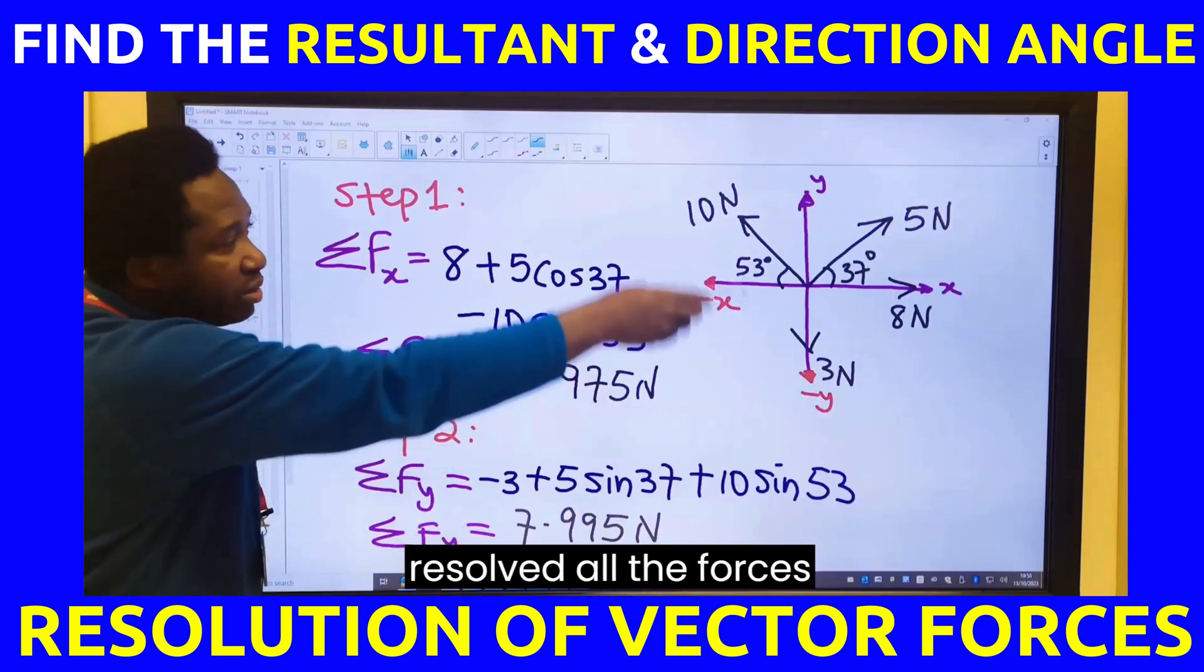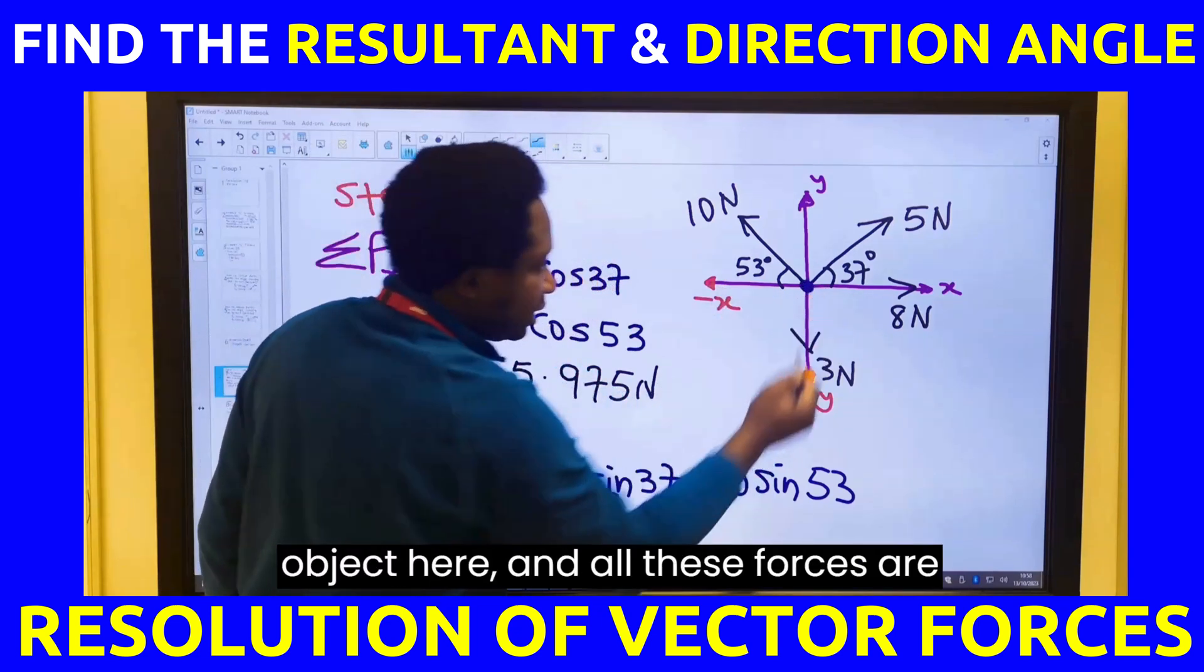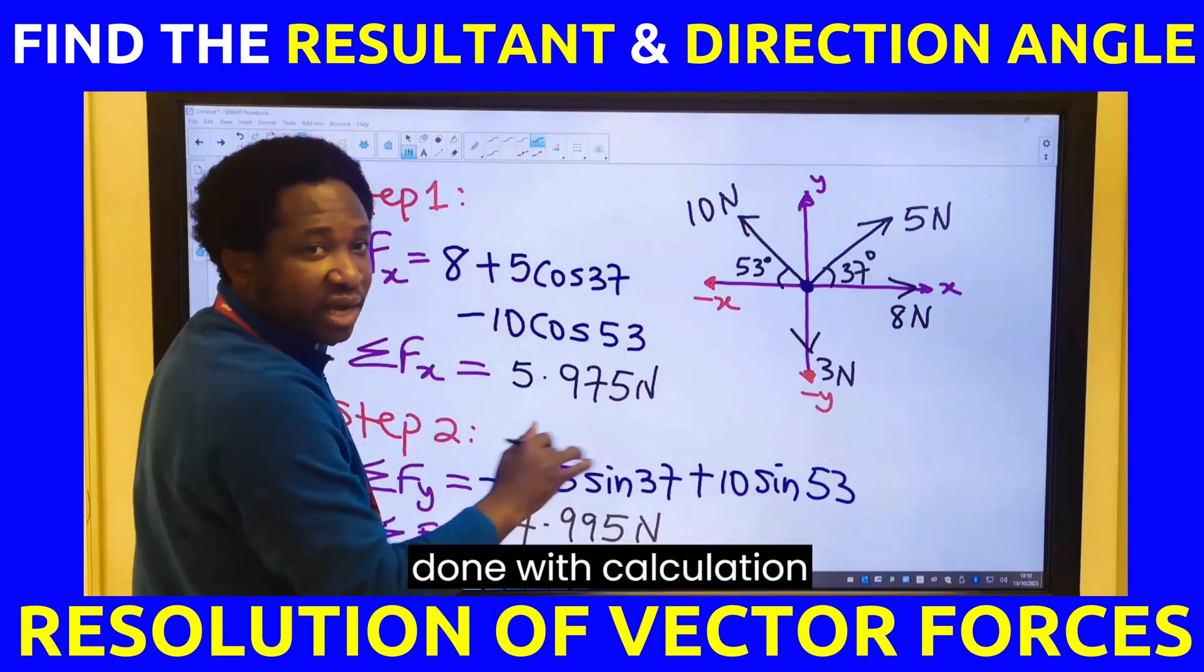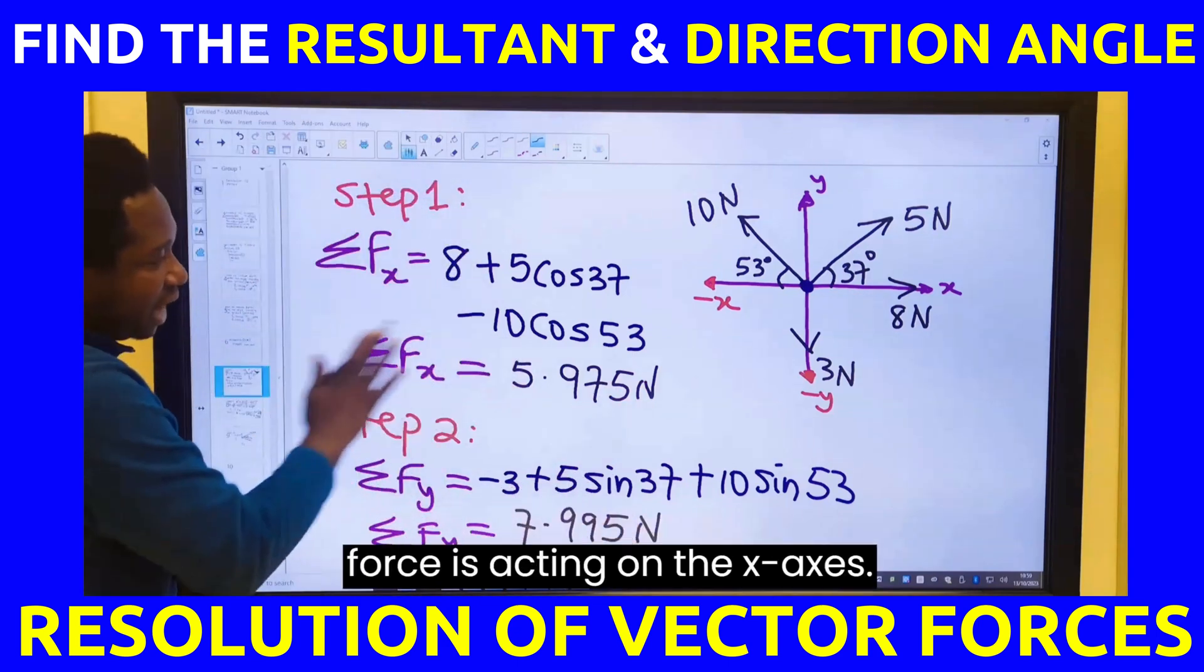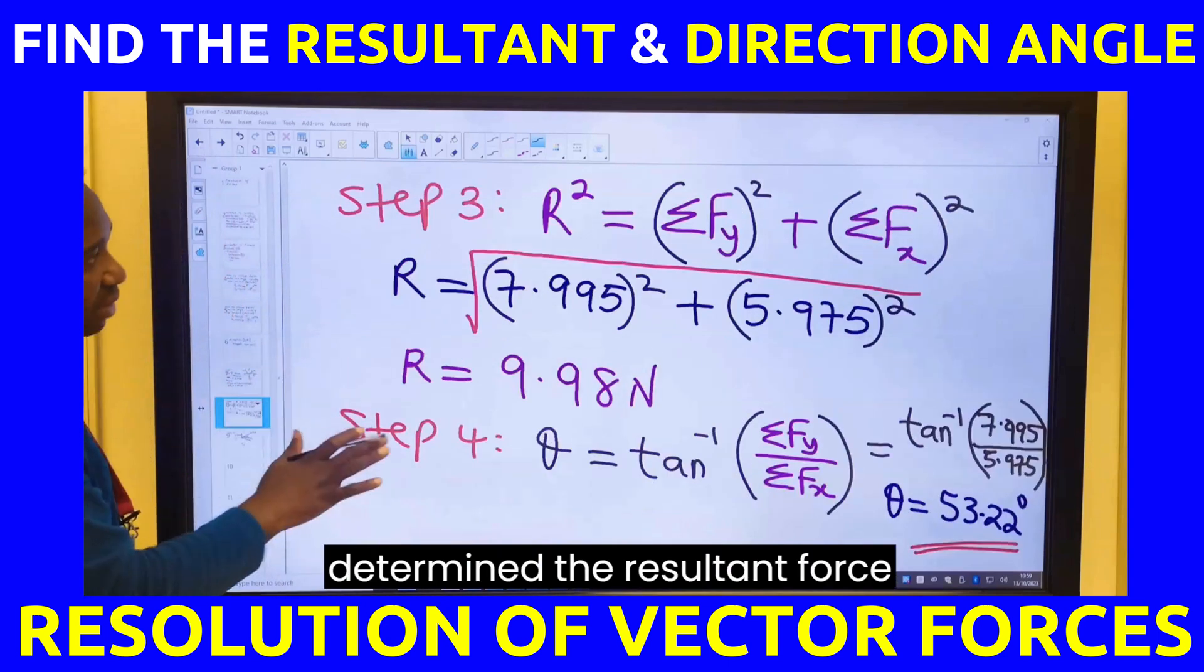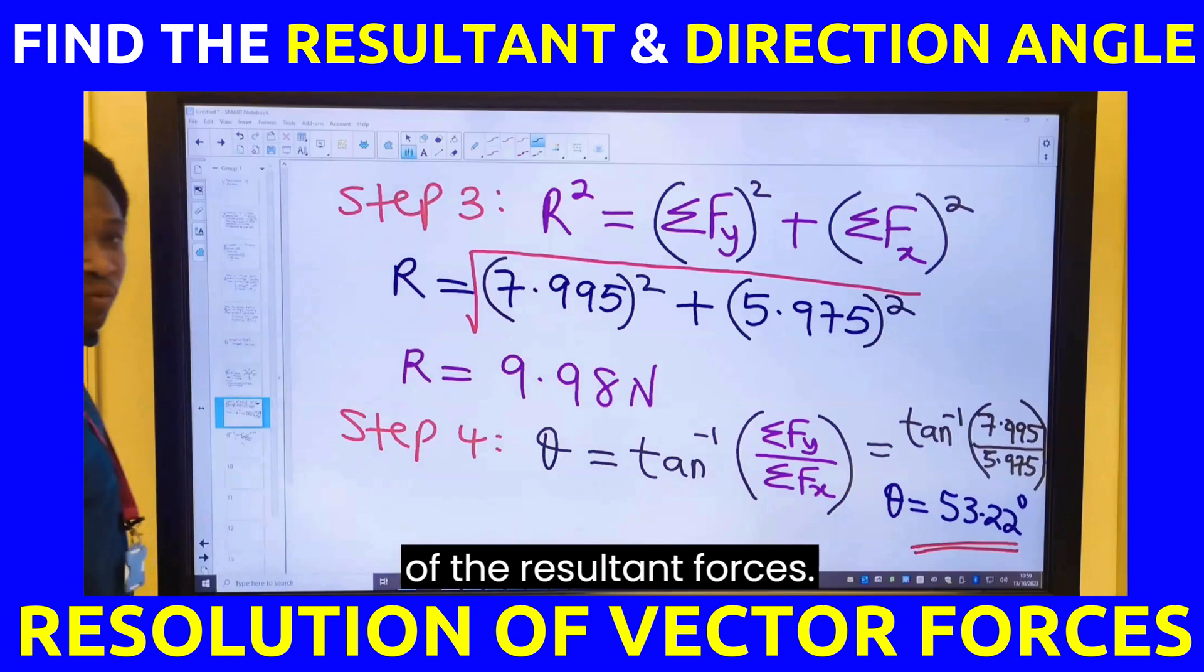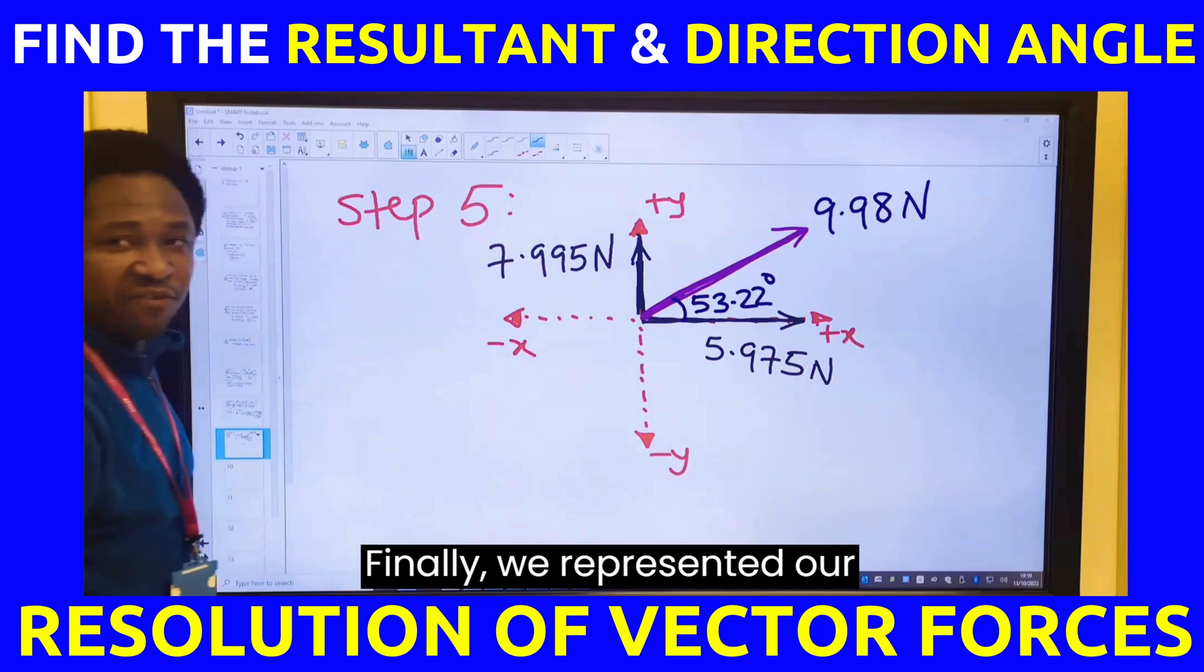We have resolved all the forces acting on this object. There is an object here, and all these forces are acting on this object. What we have done with calculation is to determine how the force is acting on the x-axis, how all the forces are acting on this object on the y-axis. We have determined the resultant force acting on the object, and we have determined the direction of the resultant forces. Finally, we have represented our final diagram.